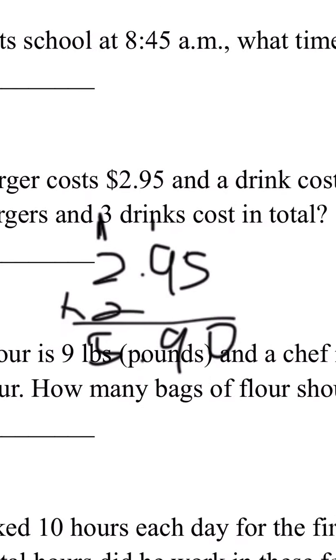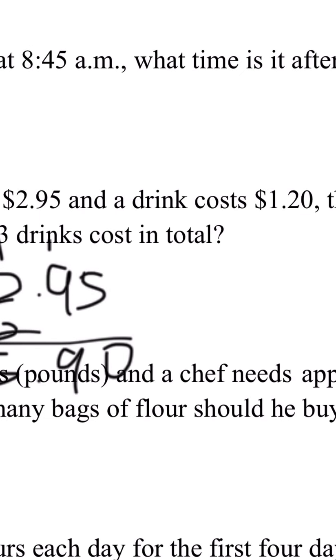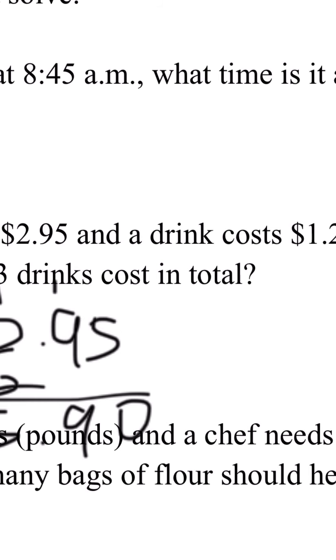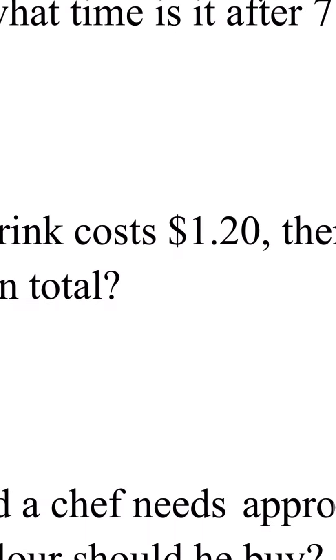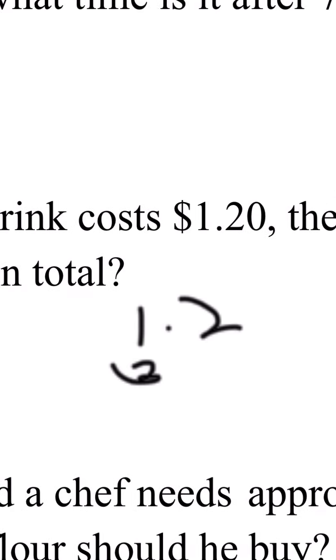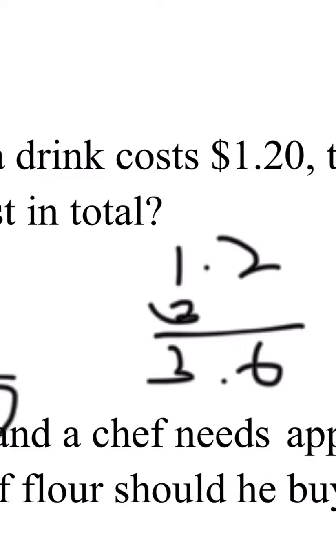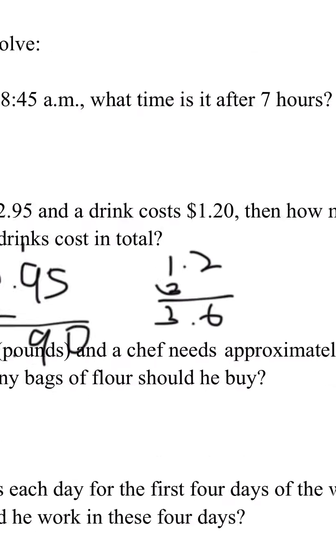Let's find drink cost: $1.20 times 3. 0.2 times 3 is 0.6, and 3 times 1 is 3.